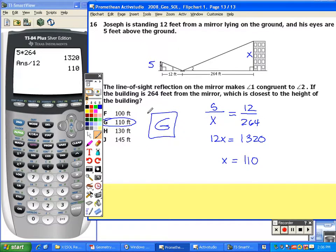On a side note, this is not the only technique that you could use to solve this. You could have set up a different proportion as long as you arrive at the correct result of 110 feet.